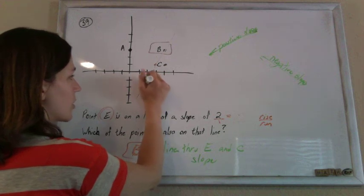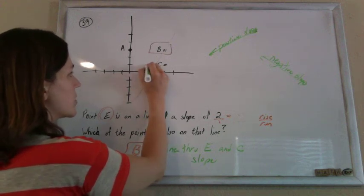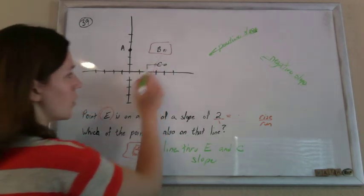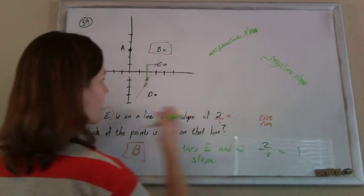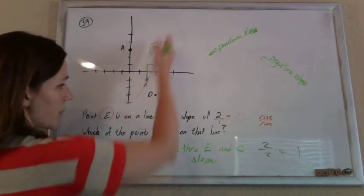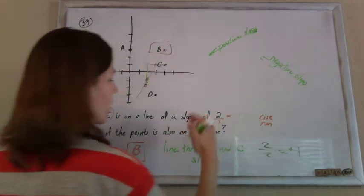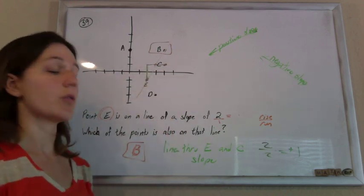So if I start at the low point and I rise up 1, 2, and I ran over 1, 2, my rise was 2, my run was 2, that's 1. I do a quick check to make sure, yep, it's positive. So if it were through E and C, the slope would have been a positive 1.